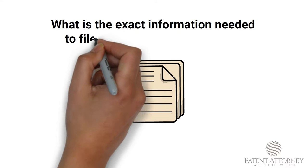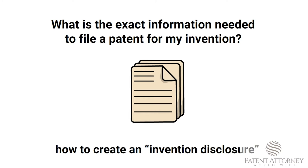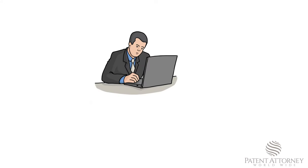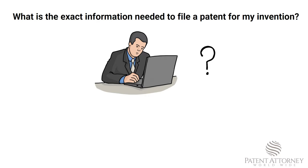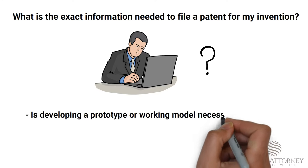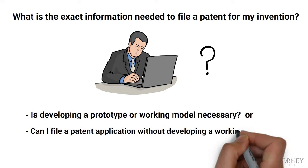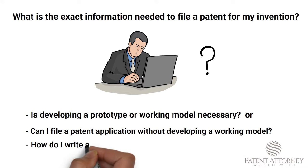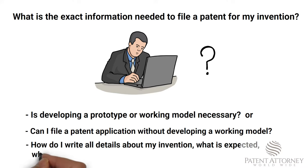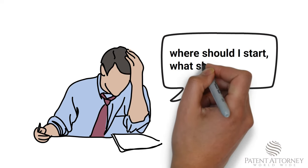What is the exact information needed to file a patent for my invention? In other words, how to create an invention disclosure? When you decide to file a patent application for your invention, you may have further questions like: Is developing a prototype or a working model necessary? Can I file a patent application without one? How do I write all the details about my invention? What is expected? Where should I start? It can be really challenging and intimidating to look at a blank paper and think, where should I start and what should I write?